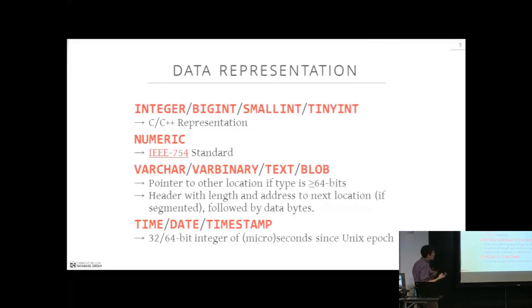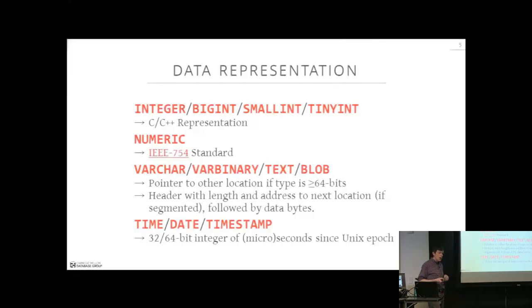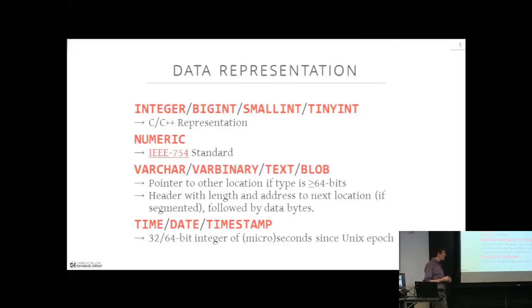For data type representation in in-memory databases, we pretty much follow the C++ standard. For integers — big int, small int, medium int, tiny int — we use the same memory model and type representation that C++ uses for signed and unsigned integers. We do the same for numerics, decimals, and reals, but note that C++ follows the IEEE 754 standard for representing floating-point numbers.